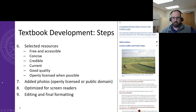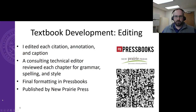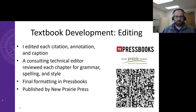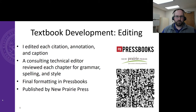We went through and optimized this book for screen readers, and also went through an editing and final formatting process. In editing, I would personally go through and edit each citation, annotation, and caption to maintain a consistent voice and style throughout the textbook. Then we would send each chapter to a technical editor who reviewed them for grammar, spelling, and style. Once chapters were finalized, I would do final formatting within Pressbooks, which we used to produce the eventual PDF, web book, and e-book versions, published by New Prairie Press through the Kansas State Library system.